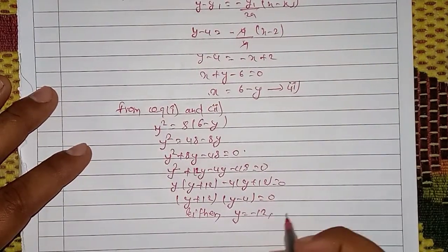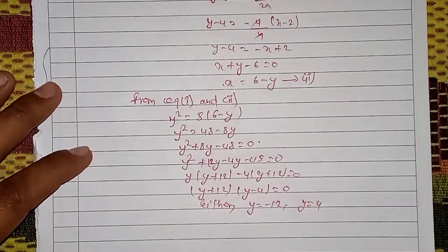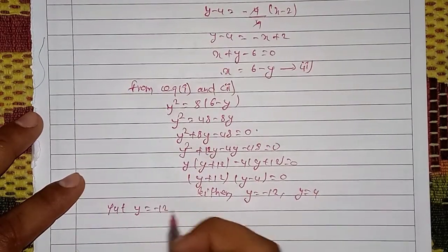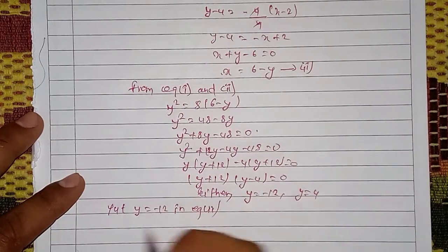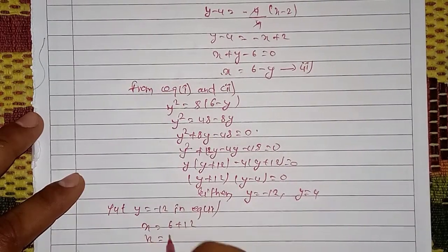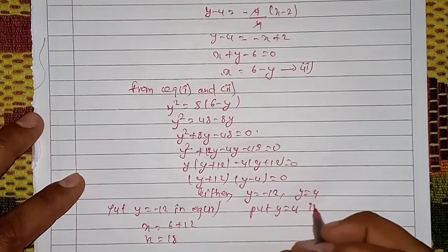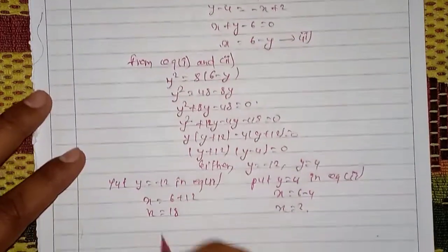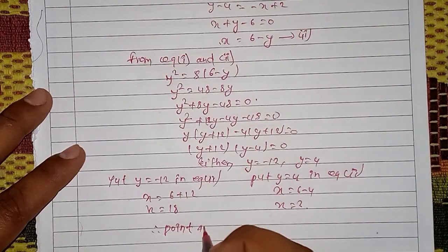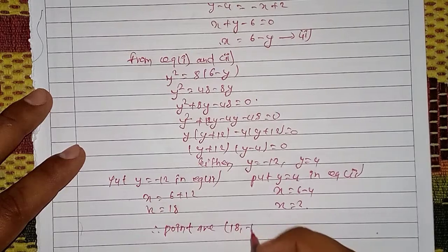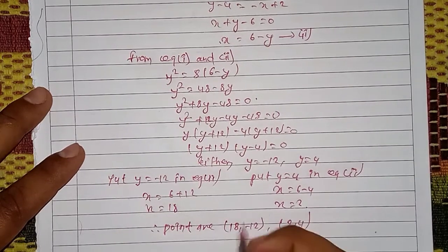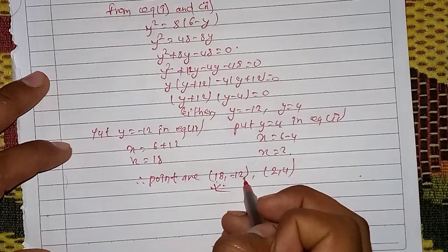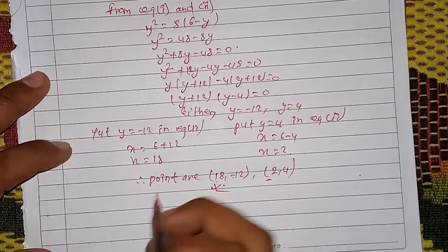So y = -12 and y = 4. Putting y = -12 into equation 1 gives x = 6 - (-12) = 18. Putting y = 4 gives x = 6 - 4 = 2. So the points are (18, -12) and (2, 4). Hence the normal to the parabola y²=8x at (2,4) meets the parabola again at (18, -12).